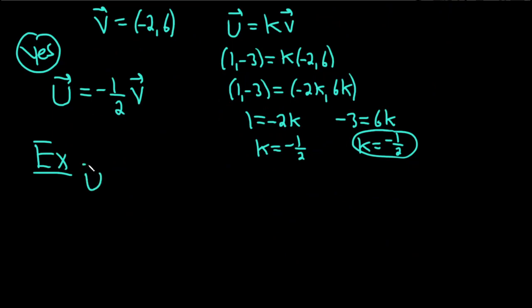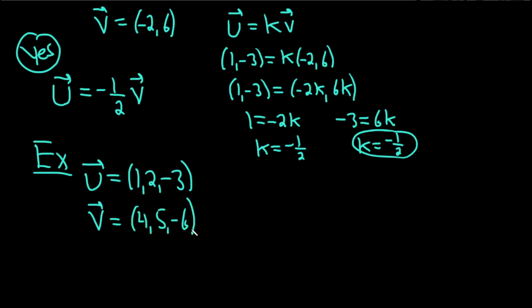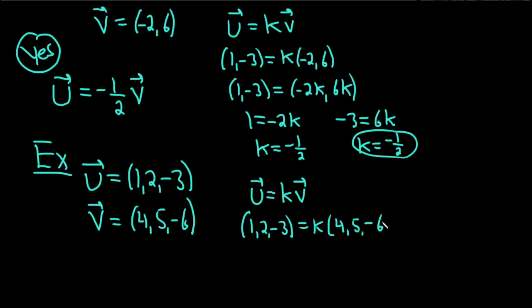Let's do another one. How about u = (1, 2, negative 3) — so we now have a vector with three components — and v = (4, 5, negative 6). Same thing: let's force them to be multiples and see if we can find a value for k. So u is (1, 2, negative 3) and k times v is (4, 5, negative 6), which distributes to (4k, 5k, negative 6k).